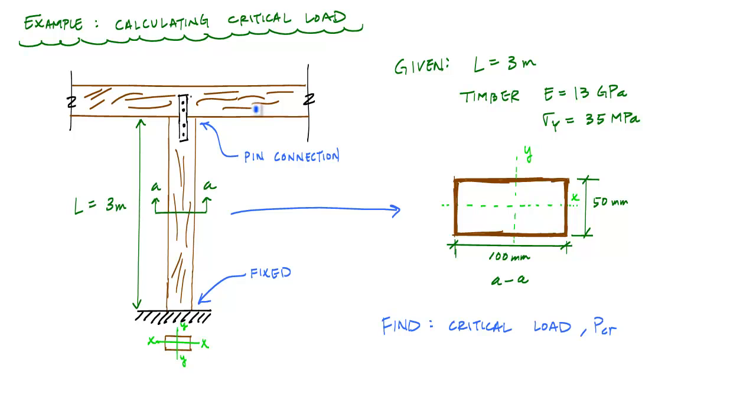So that if my column were to buckle out of plane, which means it would be sticking out in your face, this would be about the x-axis. Whereas if it were buckling about the y-axis over here, this would be in the plane of the screen. And it would be going like a curvy sinusoidal shape, up left and right, if you will.